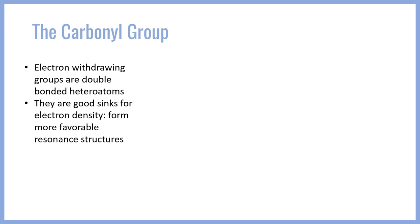What do we mean by that? Well, it means that electron density is favorably pulled into that group and a resonance structure can be drawn where excess negative charge density is favorably placed on a hetero atom like oxygen or nitrogen, that better stabilizes it than a carbon anion. To start off, let's consider this anion, which is a 1,3-dicarbonyl — two carbonyl groups adjacent to the C-minus anion.